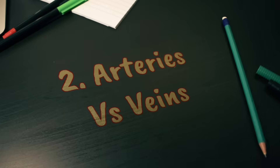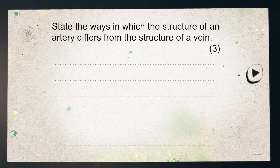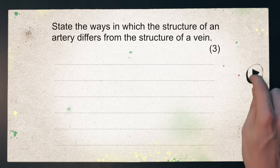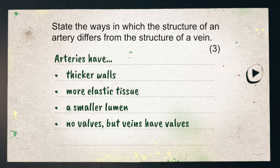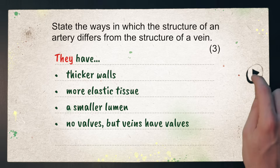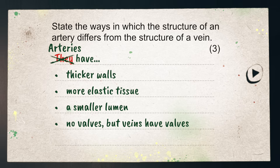Next is comparing arteries and veins. There are four marking points and you only need three of them. Arteries have thicker walls, more elastic tissue, a smaller lumen, and they have no valves — but veins do. I often see students use the word 'they' in these types of questions, which might or might not be acceptable depending on the wording. So just play it safe and name the blood vessel you're talking about. Also note that this is a comparison question, so make sure you use comparative language like 'thicker' rather than 'thick', 'smaller' rather than 'small', etc.